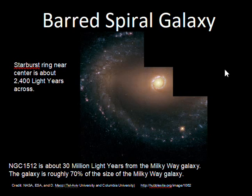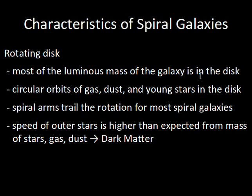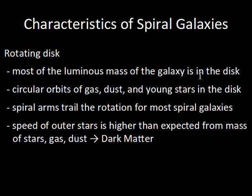As described at hubblesite.org, this is still classified as a barred spiral. More distant barred spirals also show the bar coming across. So what are the characteristics? There is a rotating disk, which distinguishes spiral galaxies from elliptical galaxies where there's no flattened disk.